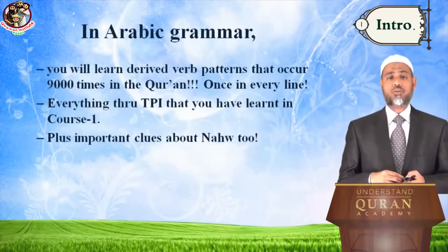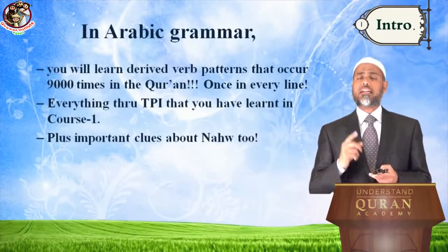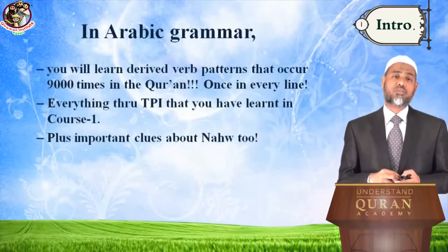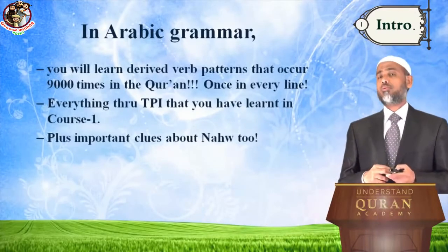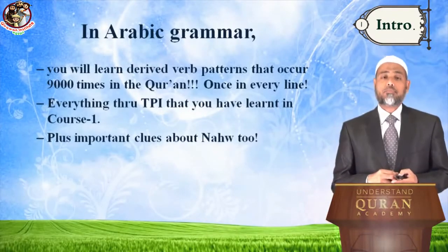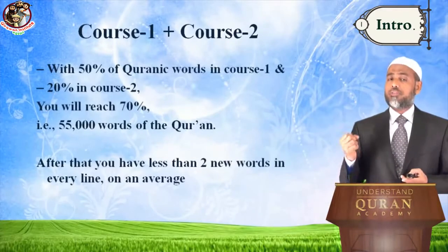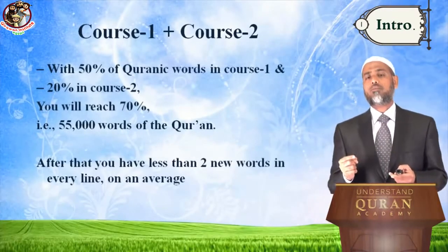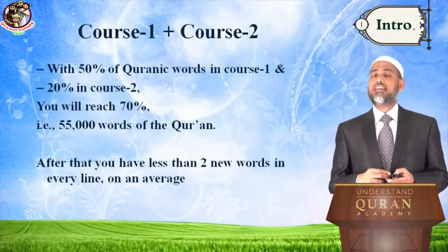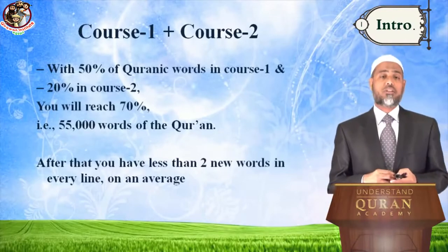In Arabic grammar, in this course you will learn derived verb patterns that occur 9,000 times in the Quran — almost once in every line. Everything is taught through TPI that you learned in course 1, plus important clues about Nahf too. So with 50% of Quranic words in course 1 and 20% in course 2, you will reach 70% — that is 55,000 words of the Quran.